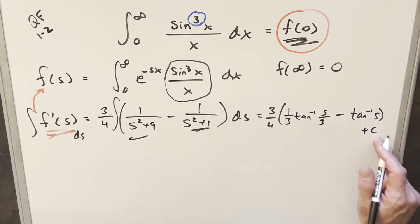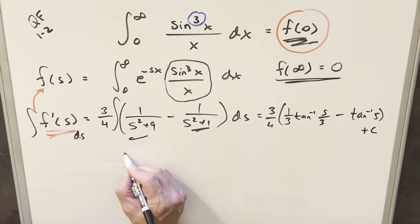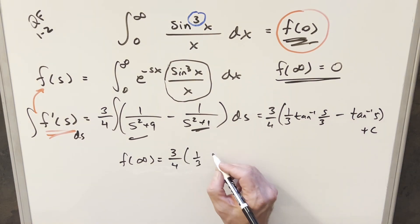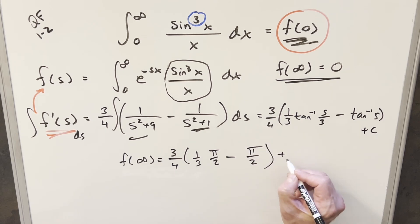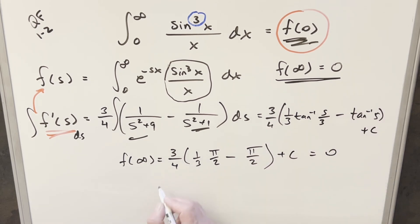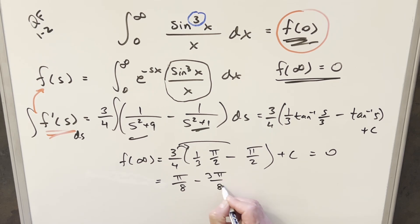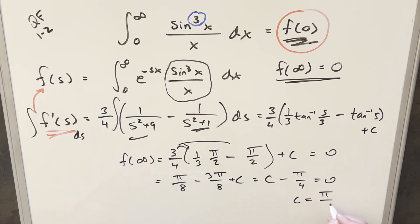To find C, we use the condition f(∞) = 0. Evaluating as s → ∞: arctan(s/3) → π/2 and arctan(s) → π/2. So we get (3/4)[(1/3)(π/2) − (π/2)] + C = 0, which simplifies to (3/4)[π/6 − π/2] + C = 0. Distributing: π/8 − 3π/8 + C = 0, giving −2π/8 + C = 0, so C = π/4.